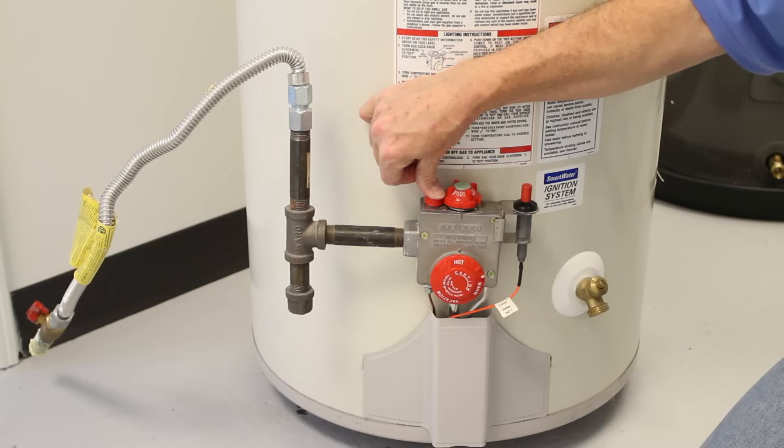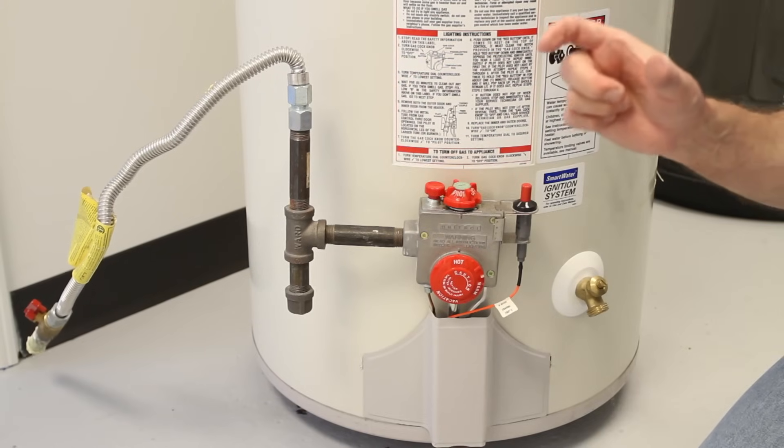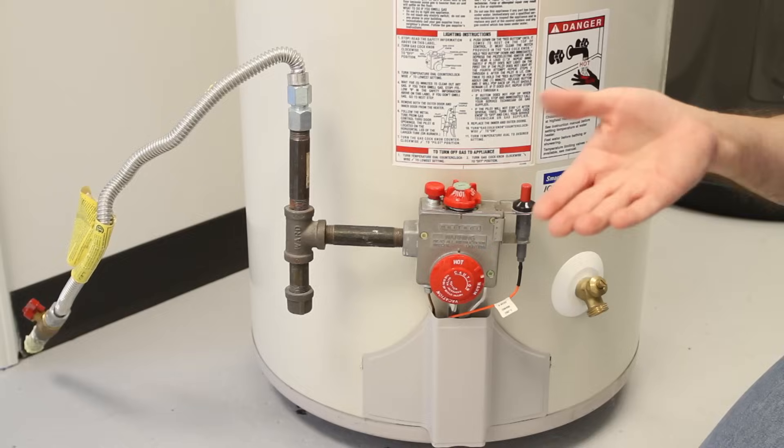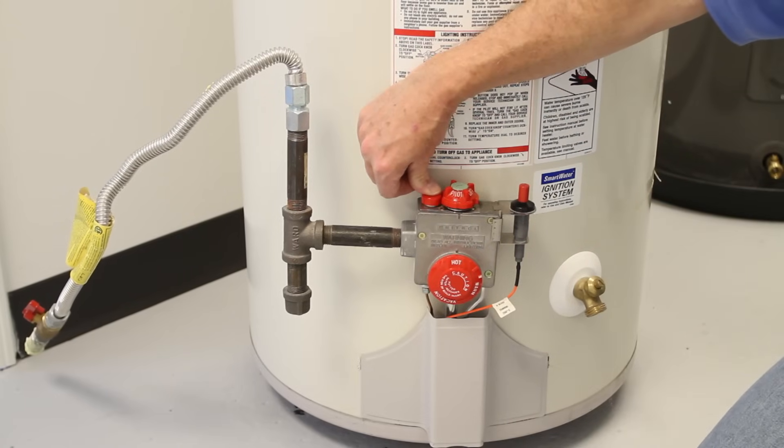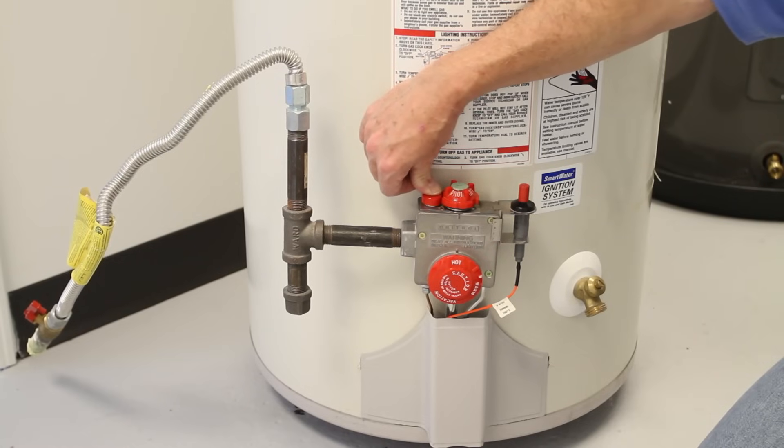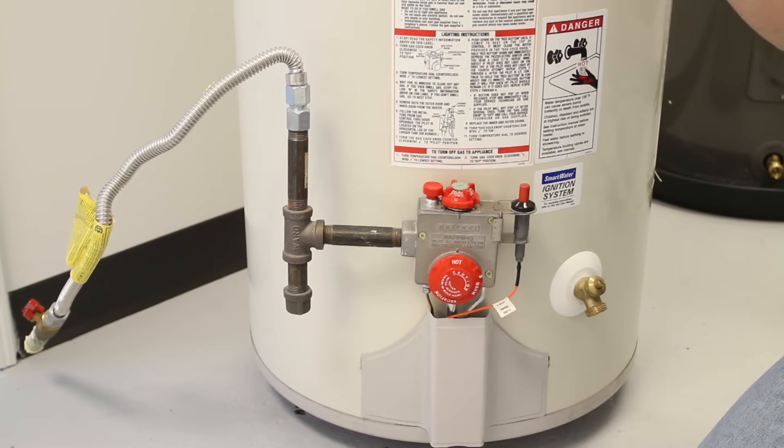And if you release this before the thermocouple is warm enough, the supply will cut off and the pilot will go out. So this override, you simply need to do it long enough so that the thermocouple will leave the supply on after you let that button up.